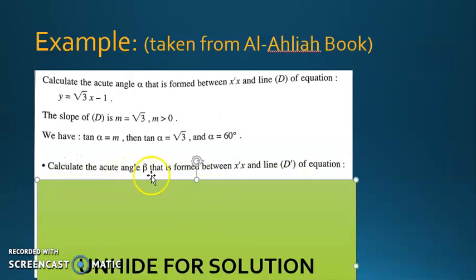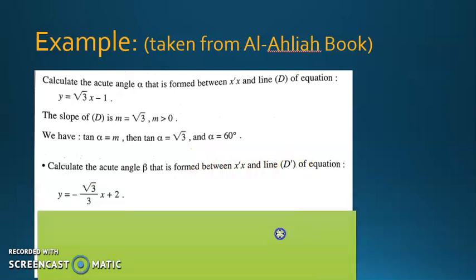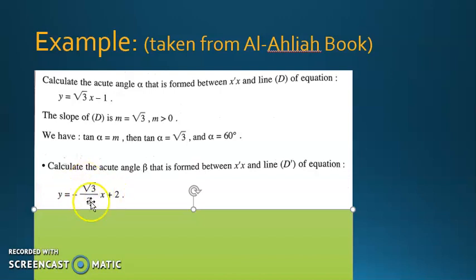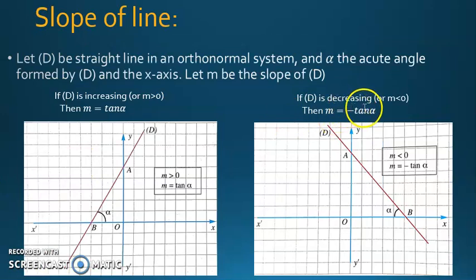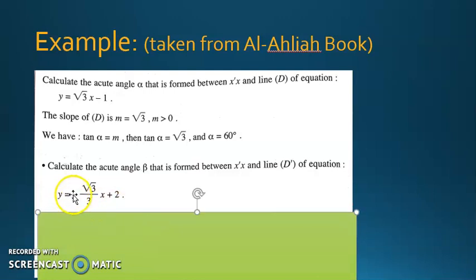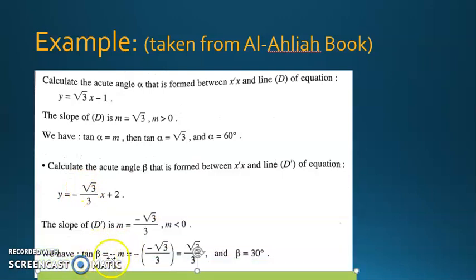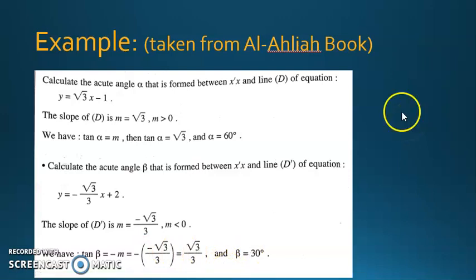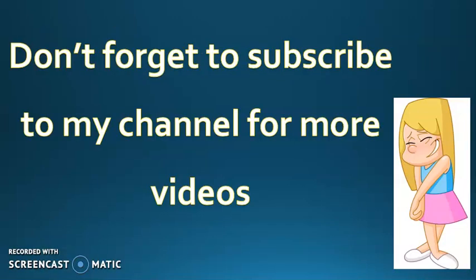Another exercise: calculate the acute angle beta formed between the x-axis and line D′ with equation y = −(radical 3 / 3)x + 2. The slope is negative, so M = −tan β, which means tan β = −M = radical 3 over 3. Using your calculator, press shift-tangent of radical 3 over 3 to get beta equals 30 degrees. And now we're done with this chapter. Thanks for watching.